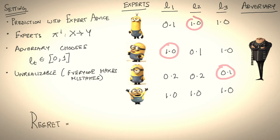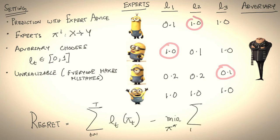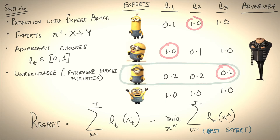The objective of the game is to bound regret, which is a difference of two terms. The first term is the total loss of the learner. The second term is the loss of the best expert in hindsight — look over all the experts, sum over their losses, and pick the best one. Over time, you want regret to grow sublinearly, so the average regret goes to zero.